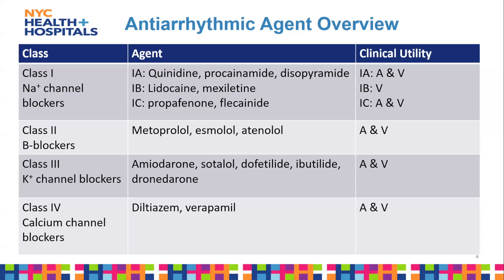Class 1c agents are propafenone and flecainide, which cause a larger blockade of sodium channels but have no effect on the QTc. The CAST 1 and 2 trials showed increased mortality in patients with a previous MI when trying to reduce the frequency of PVCs, so they're not routinely used in patients with left ventricular dysfunction.